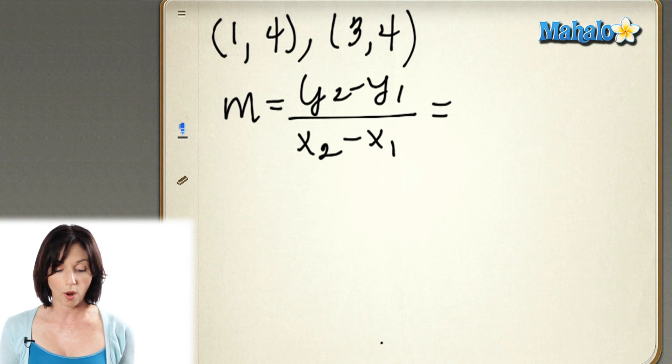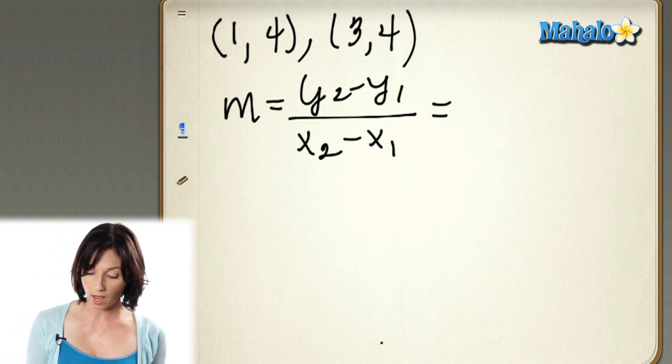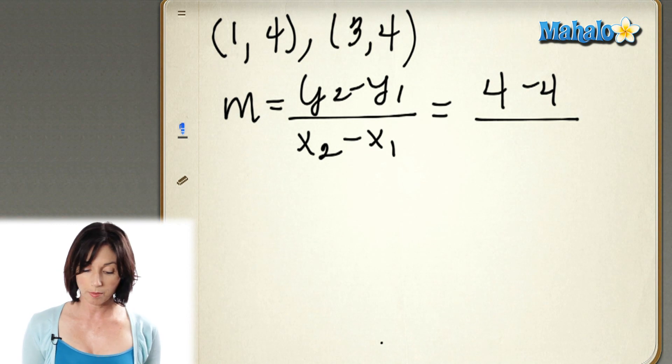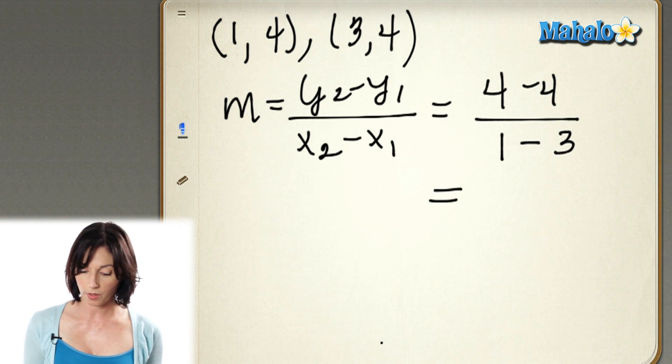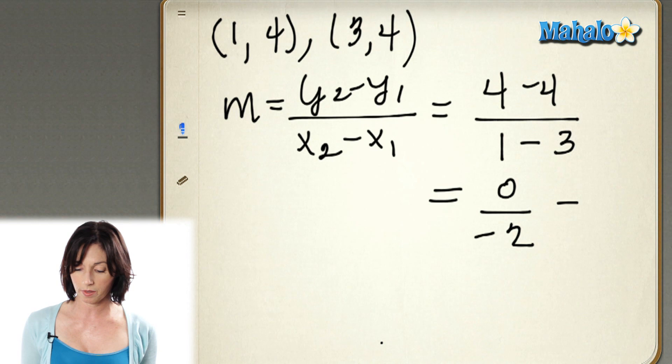So in our case, our y-coordinates are 4. So on the top, I've got 4 minus 4. And on the bottom, I have the difference in my x-coordinates, so 1 minus 3. 4 minus 4 is 0. 1 minus 3 is negative 2, but 0 over negative 2 is just 0.